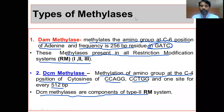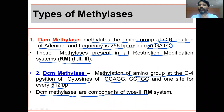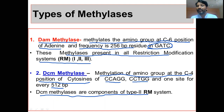Methylation in DNA only occurs at two nitrogen bases: one is adenine and the second one is cytosine — not thymine and guanine.